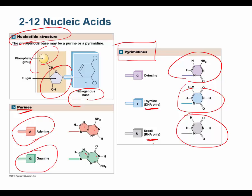The three nitrogenous bases common to both DNA and RNA are adenine, guanine, and cytosine. DNA contains a fourth one — thymine — whereas RNA doesn't. But RNA contains a fourth one — uracil — whereas DNA doesn't have uracil. A nucleotide structure is a nitrogenous base, a pentose sugar (ribose or deoxyribose), and a phosphate group.